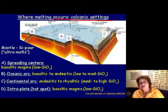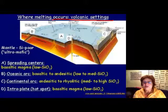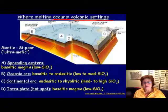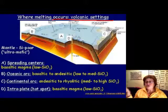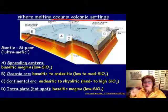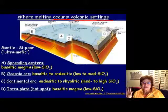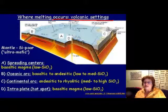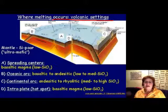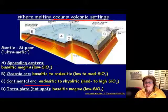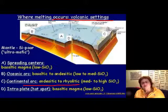Mafic basaltic flows are friendly — people don't have to be scared. You can actually make the flow go away from your house so it won't catch fire. At oceanic-oceanic plate boundaries, you typically get andesitic, sometimes basaltic but mostly andesitic, even toward rhyolitic composition, so it's more explosive and more dangerous.